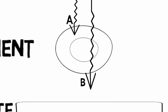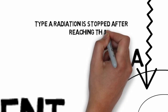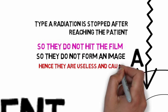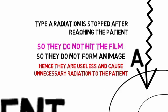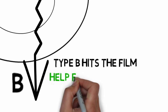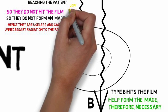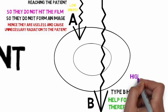However, there are two types of radiations here. Type A radiation is stopped after reaching the patient, so they do not hit the film or form an image. Hence, they are useless and cause unnecessary radiation to the patient. Type B hits the film and helps form the image. Therefore, they are necessary. A is low energy and B is high energy.